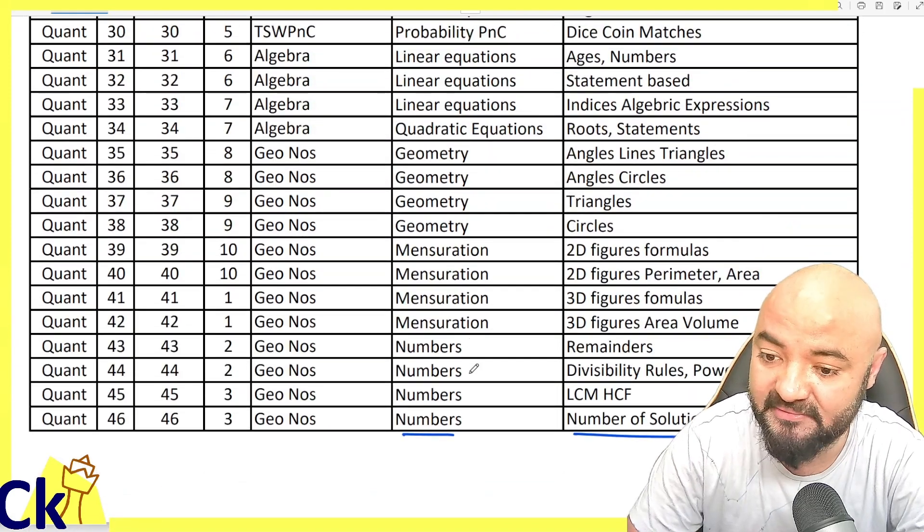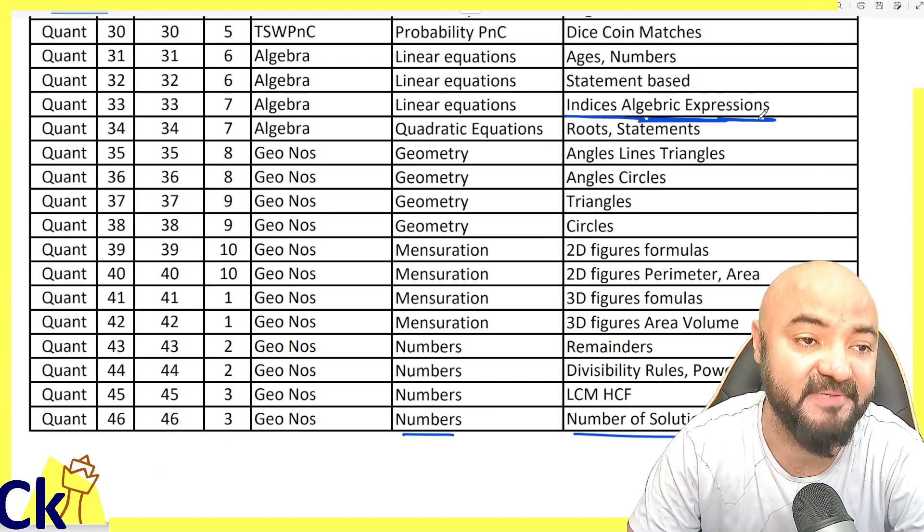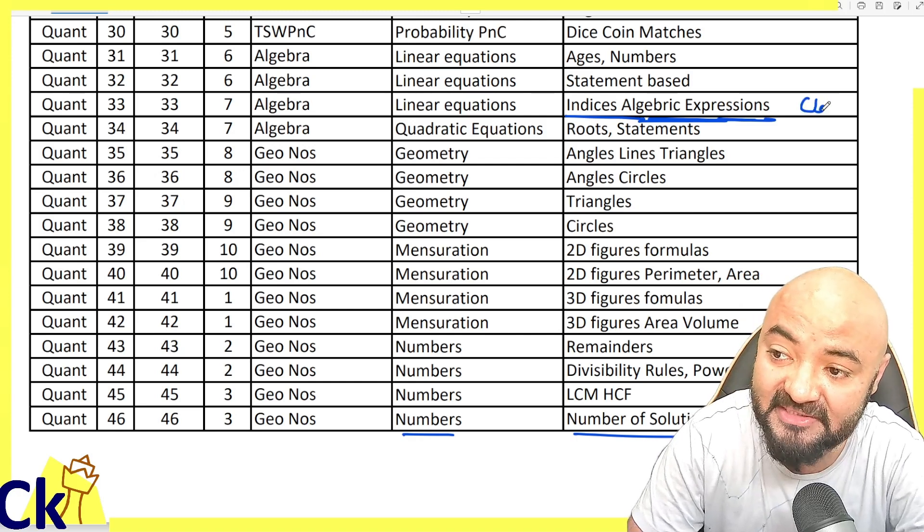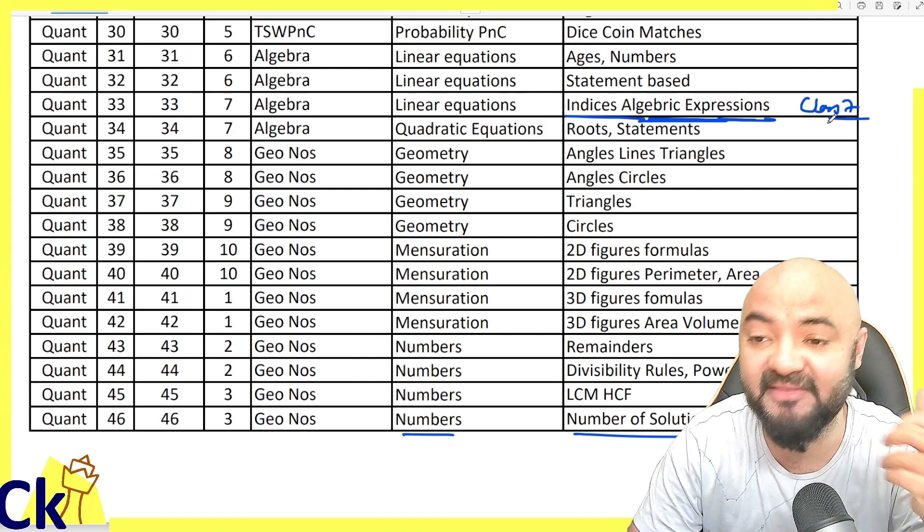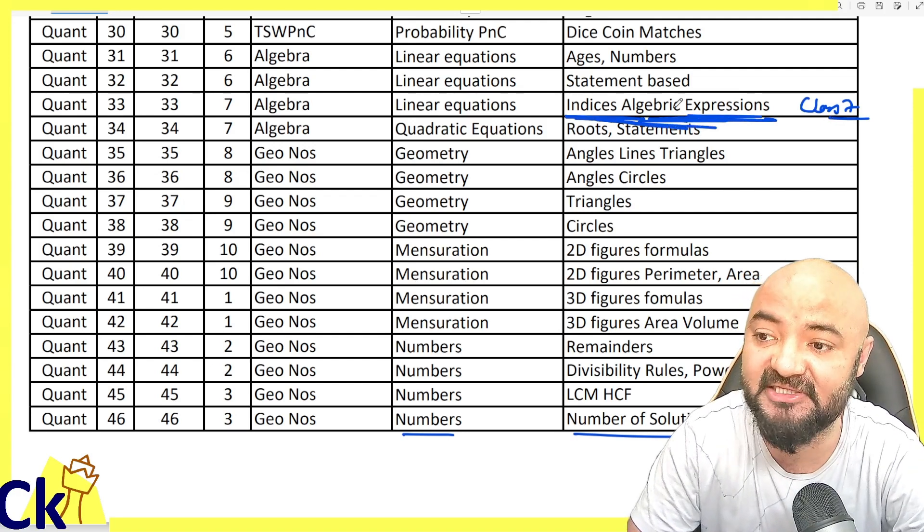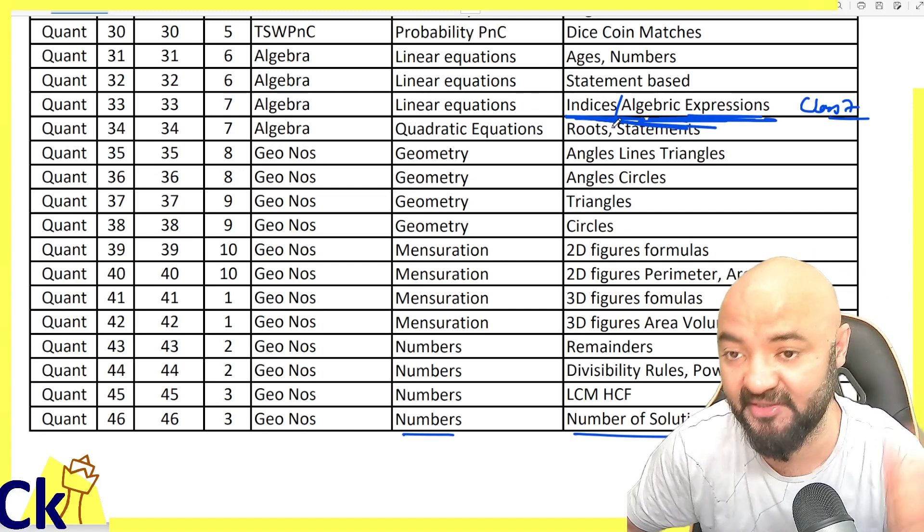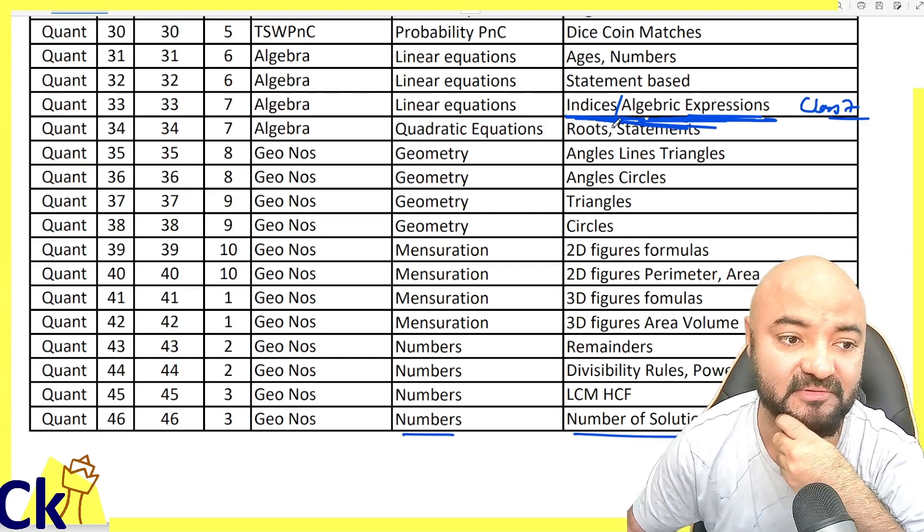Number nine is indices and algebraic expressions - a very simple topic we studied in school in class seventh. But because nobody revises or remembers it, people tend to leave this topic. Please do indices and algebraic expressions. Both topics we have to cover. Every week I'm going to pick up one or two topics.